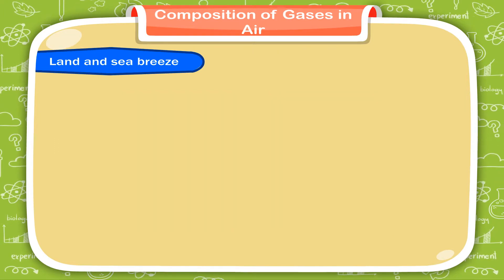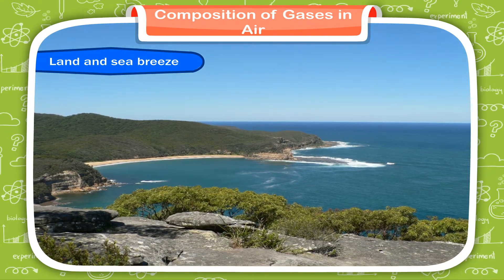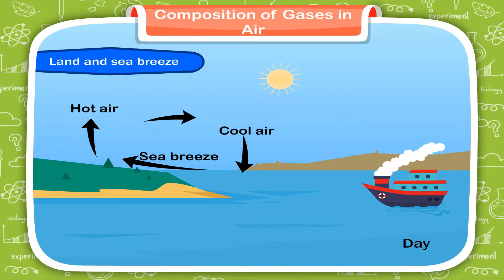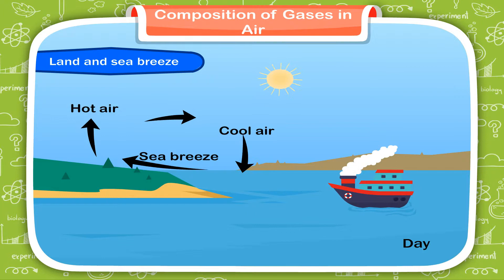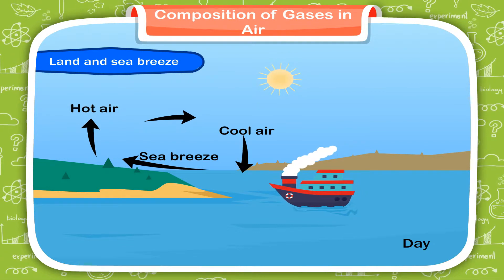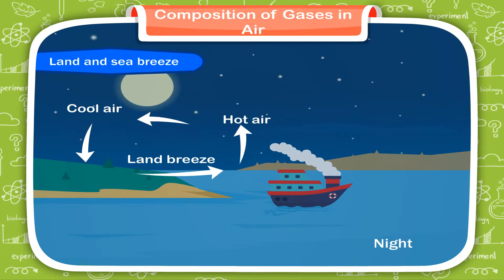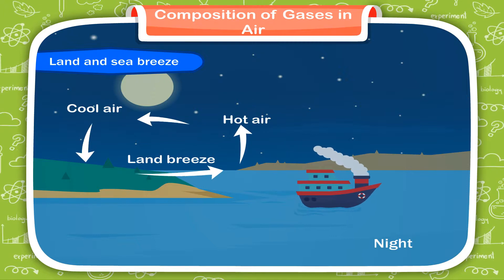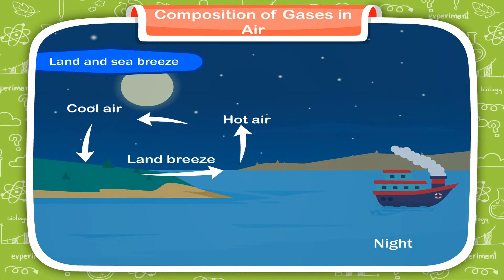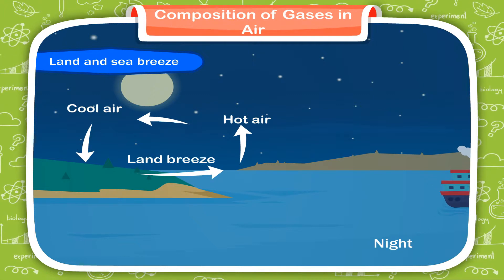Land and sea breeze. In coastal areas, during the day, the wind blows from the sea to the land. The heat of the sun heats the air above the land more quickly than the air above the sea. The hot air above the land rises up and the cool air above the sea rushes to replace it. This is called sea breeze. At night, the air above the water is warmer than the air above the land. The hot air above the sea moves up and the cool air from the land rushes to replace it. This is called land breeze. Land breeze blows during the night.